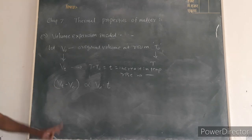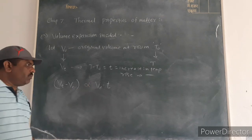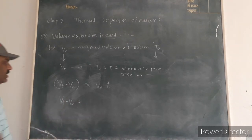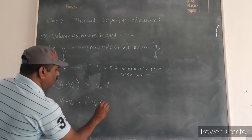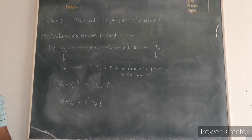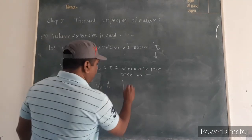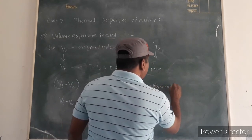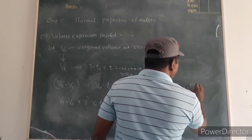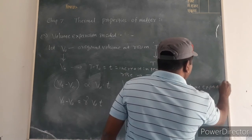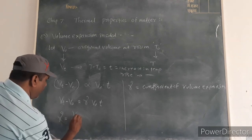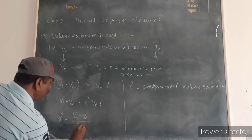Hence the increase in volume, Vt minus V0, is directly proportional to V0 times T, or Vt minus V0 equals gamma times V0 times T, where gamma is the constant of proportionality and is called the coefficient of volume expansion. Its value is gamma equal to Vt minus V0 divided by V0 times T.